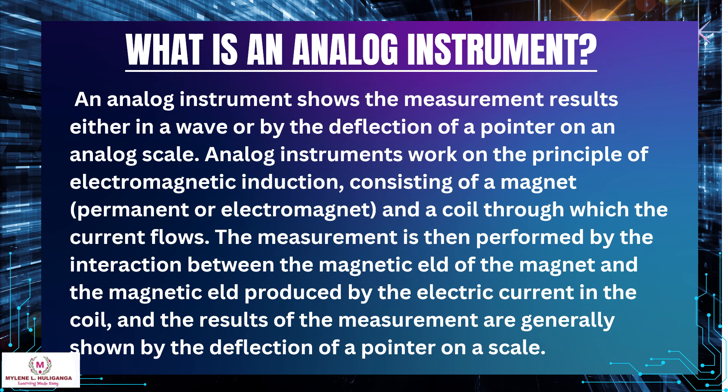What is an analog instrument? An analog instrument shows measurement results either as a wave or by the deflection of a pointer on an analog scale. Analog instruments work on the principle of electromagnetic induction, consisting of a magnet — permanent or electromagnet — and a coil through which the current flows.